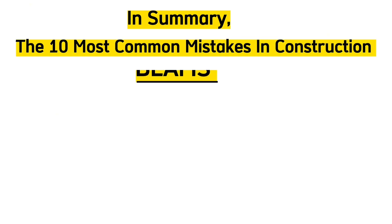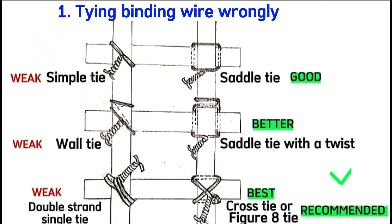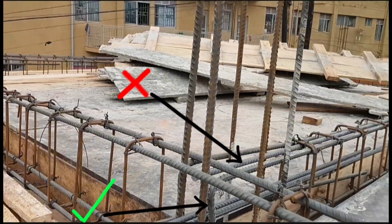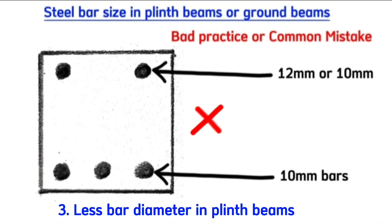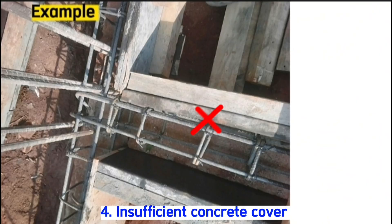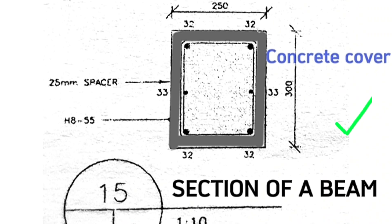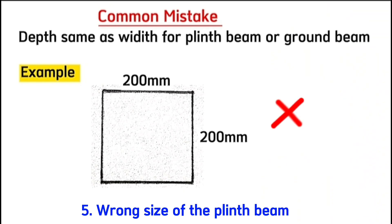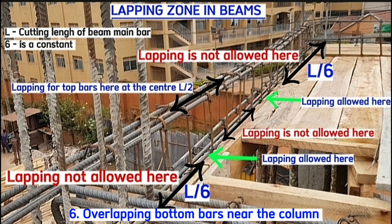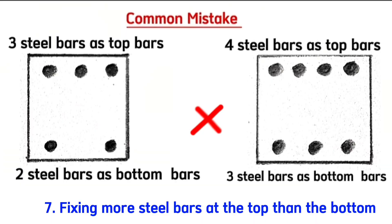In summary, the ten most common mistakes in construction for beams are: tying binding wire wrongly, insufficient development length, using less bar diameter in plinth beams, insufficient concrete cover, the wrong size of the plinth beam, overlapping bottom bars near the columns, and fixing more steel bars at the top than the bottom.